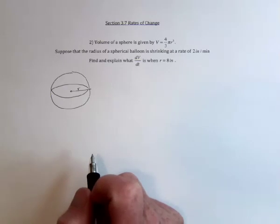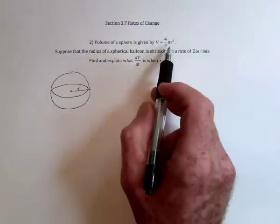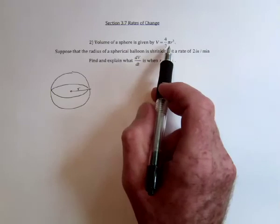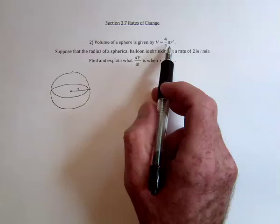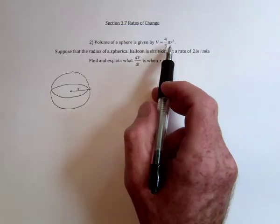And find dV/dt. So this doesn't have a t in it, but it's implied that it's a function of t, because of course time has to pass in order for the balloon to get smaller.